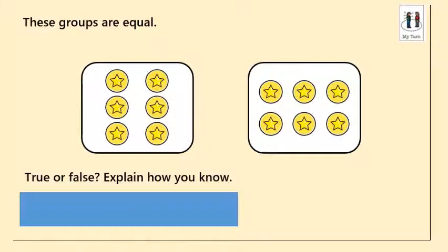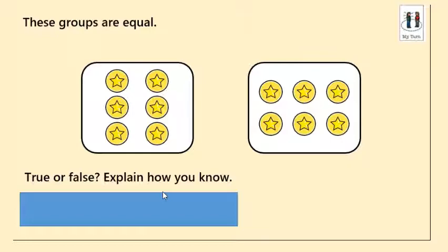With this question, the statement says these groups are equal, and I need to say whether that's true or false and explain how I know. You do that by counting — if they are equal, they must both be the same. Counting the first group: one, two, three, four, five, six. The second group: one, two, three, four, five, six. I think it's true. It is true because there are six stars in each group, so therefore they are equal.